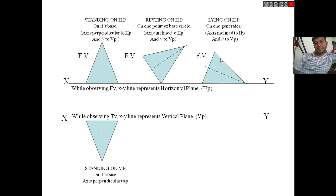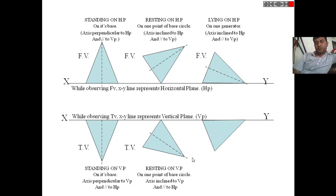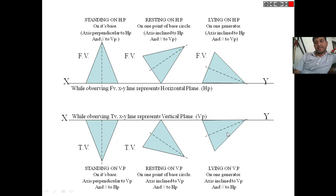When the solid is standing on VP on its base with axis perpendicular to VP and hence parallel to HP, the top view shows a triangular shape below the XY line. If the solid rests on VP on one corner of the base, a different triangular shape is drawn in the top view. If the solid lies on VP on one of its generator lines with axis inclined to VP and parallel to HP, the top view is observed accordingly.